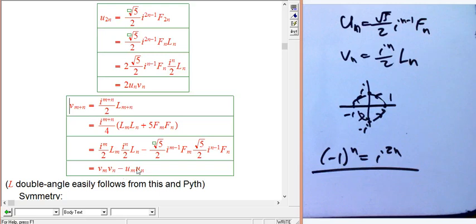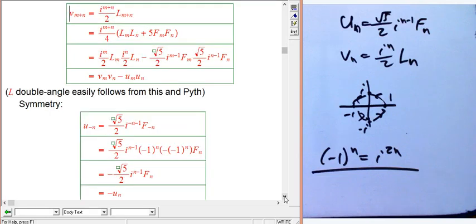Cosine cosine minus sine sine. And I'm not going to do all the rest of them, because they really follow easily. So let's look at the symmetry.